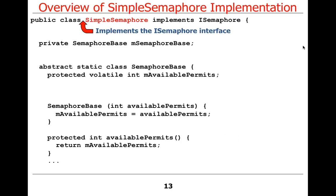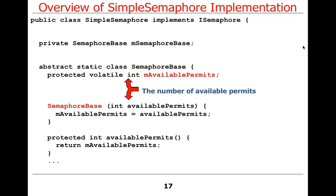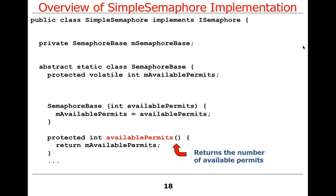Here is SimpleSemaphore, which implements ISemaphore. It defines an instance of SemaphoreBase. SemaphoreBase is the root of the implementer hierarchy. It defines availablePermits as a volatile int, goes ahead and stashes that away in SemaphoreBase, and then availablePermits simply returns that. This looks more or less like your code, except people didn't factor it out quite this way.